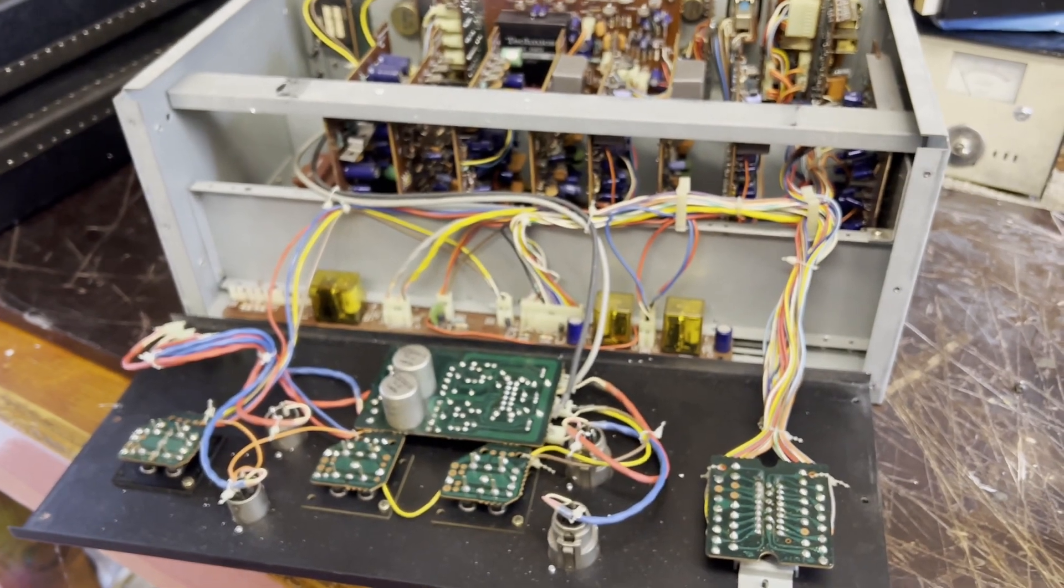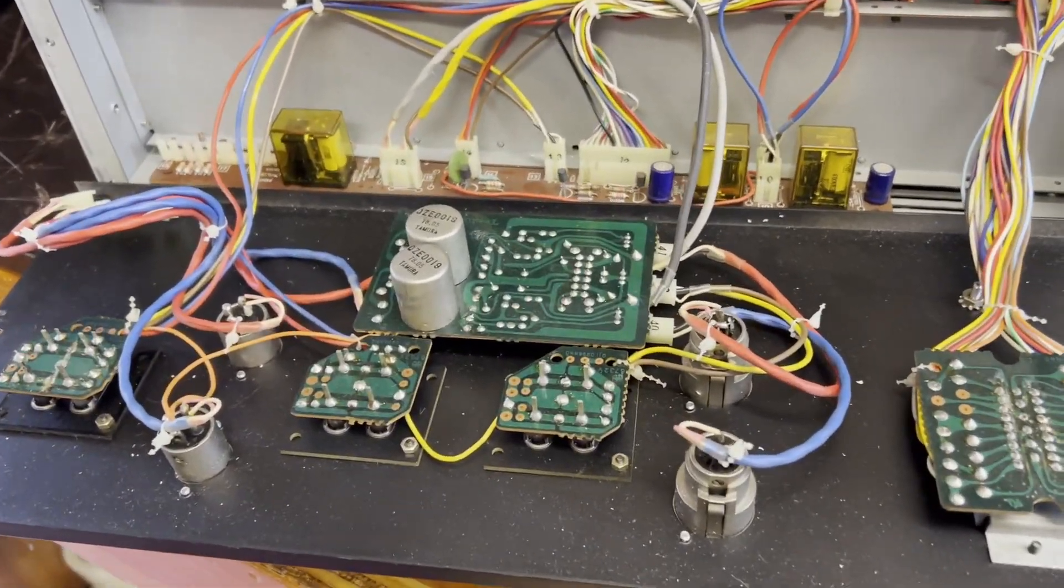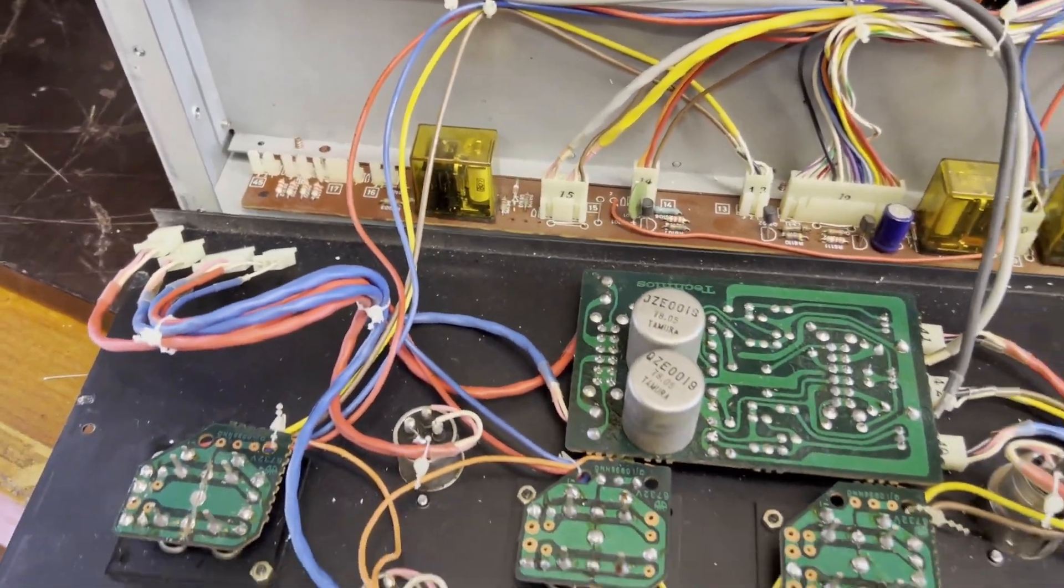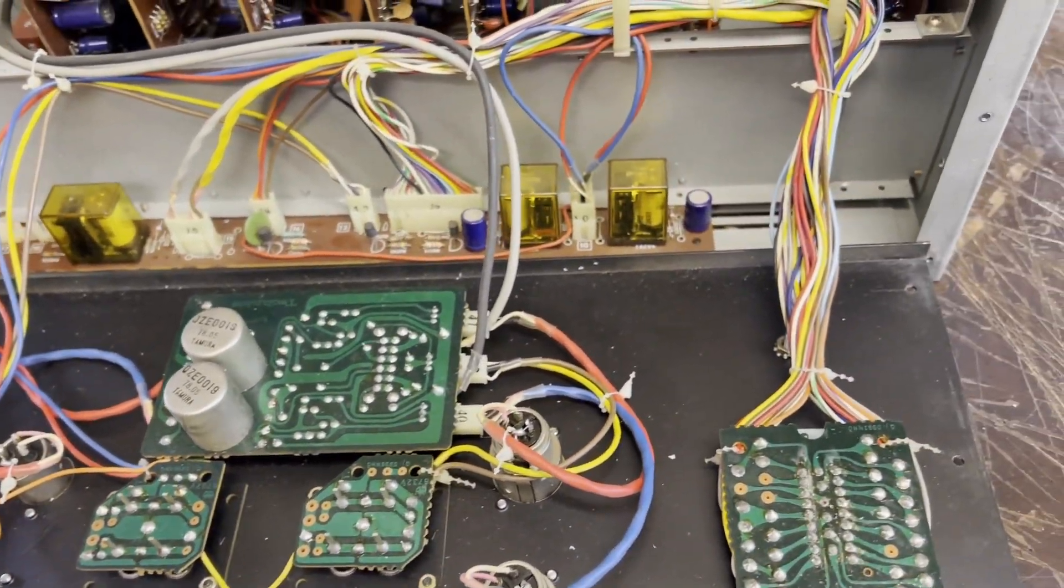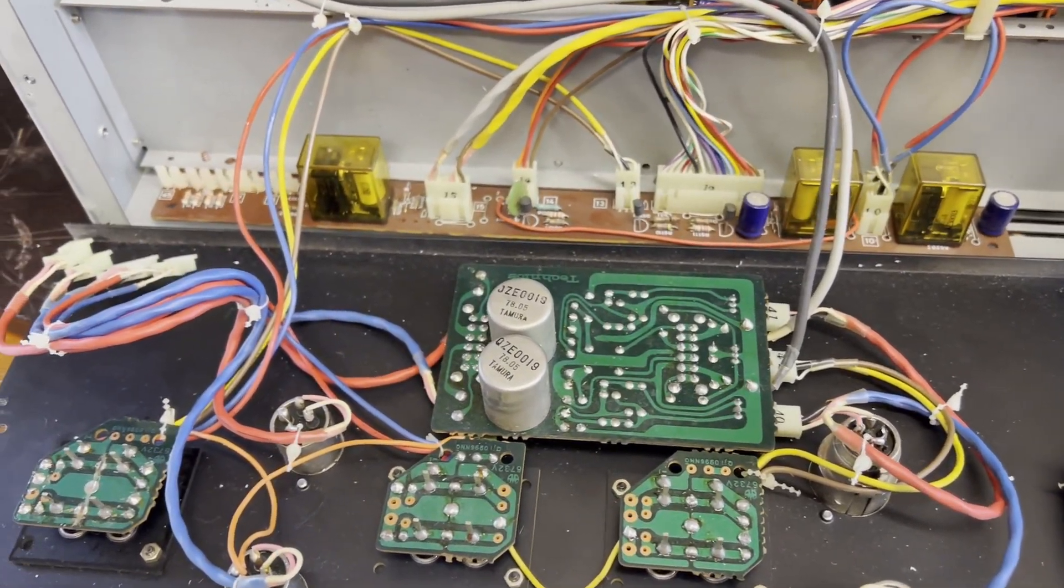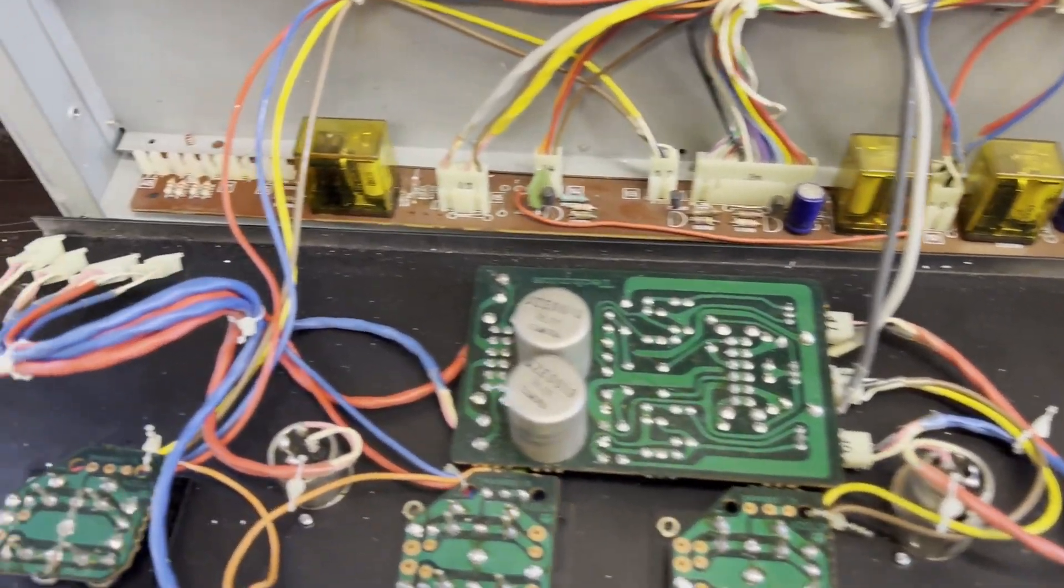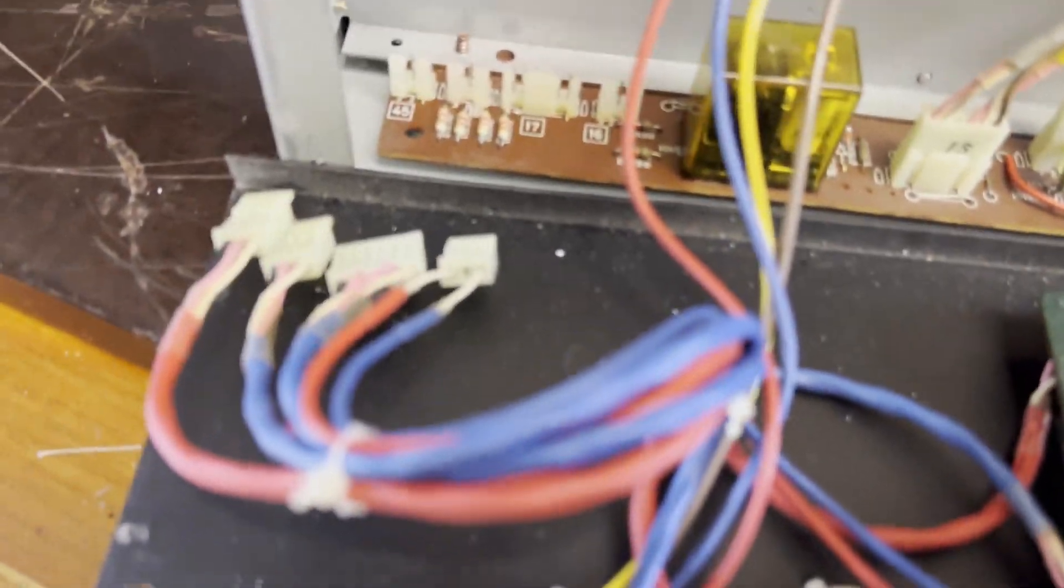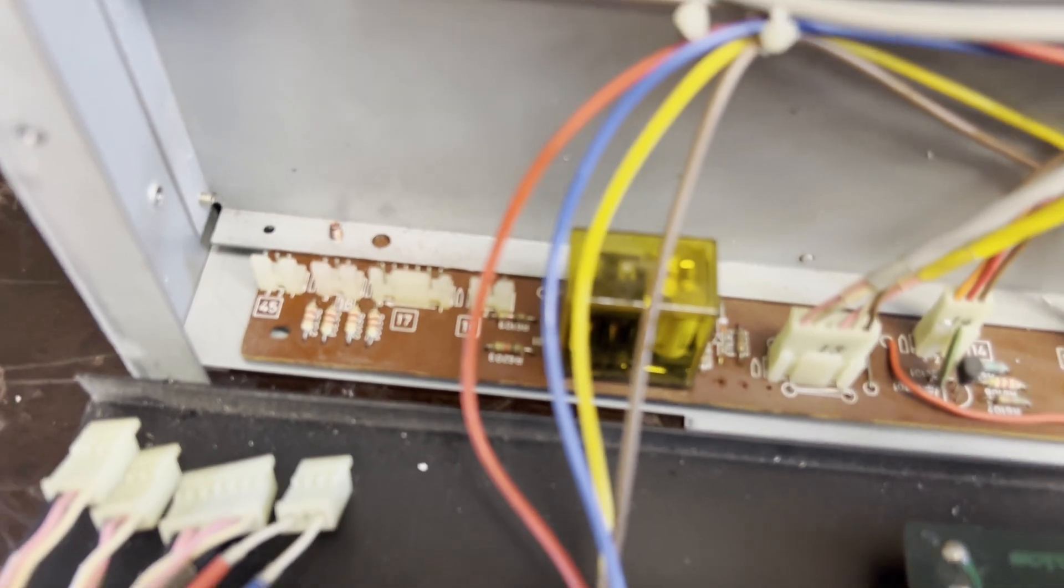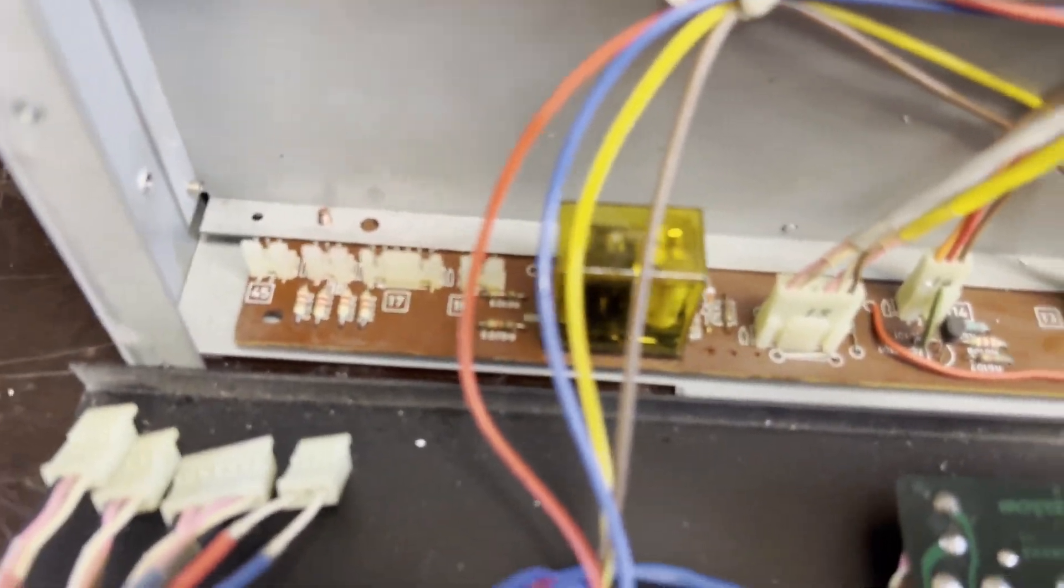We're looking at the record play amplifier on the Technics 1800. We're starting to do the service work today to clean and lube all the pots and controls and connections. We're going to take all the harnesses out, service all the connections.